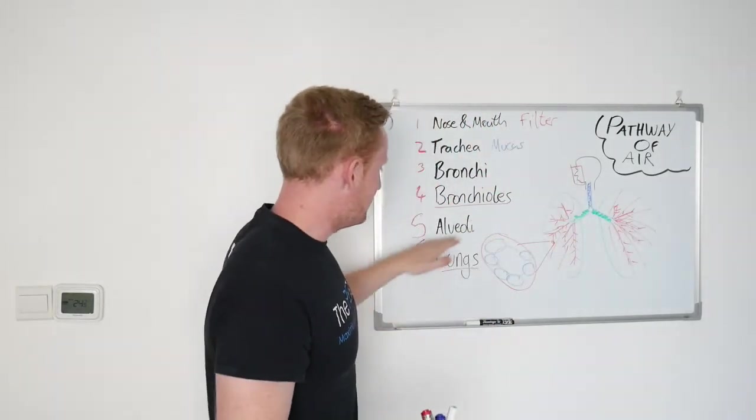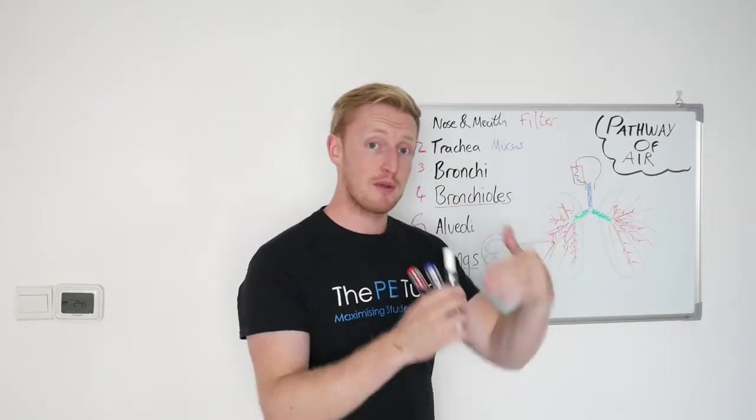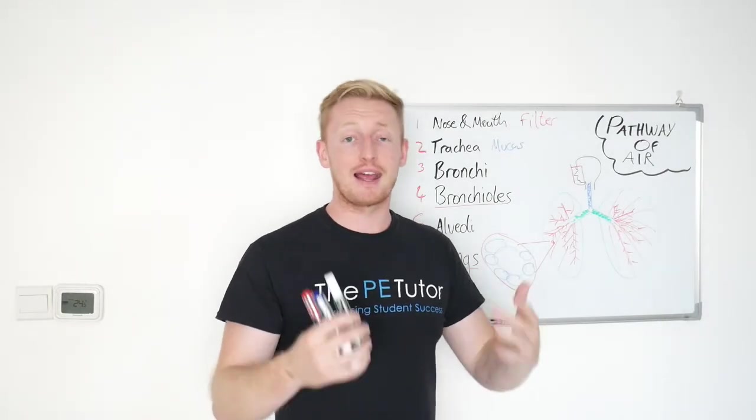And then all of this is occurring inside the lungs, and they're essential because they're attached to the rib cage, that moves, that causes a pressure difference, and that allows us to breathe.